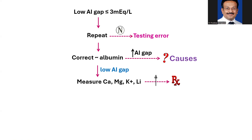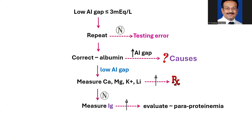We recently had a case of lithium toxicity where the patient had a low anion gap — so check lithium as well. If cations are high, treat the underlying cause — hypercalcemia, hyperkalemia, or lithium toxicity. If cations are normal, check immunoglobulins, do protein electrophoresis, serum electrophoresis, and cholesterol levels to rule out pseudo-hyponatremia from paraproteinemia or hyperlipidemia. Multiple myeloma and Waldenström's macroglobulinemia can present in the ICU. If immunoglobulins are normal, assess for chloride overestimation or sodium underestimation as the last rare cause.